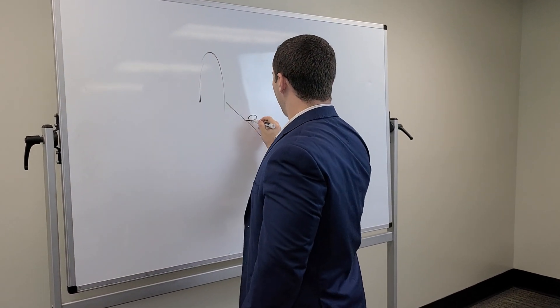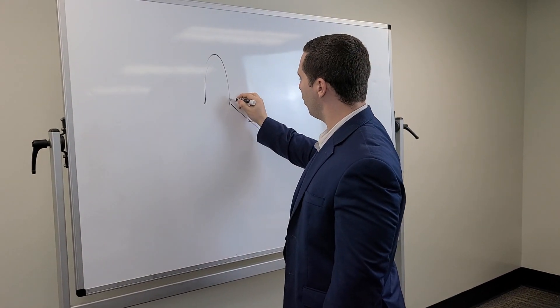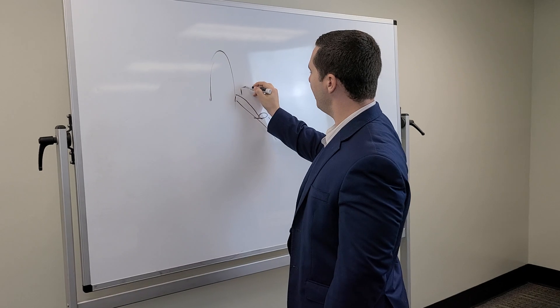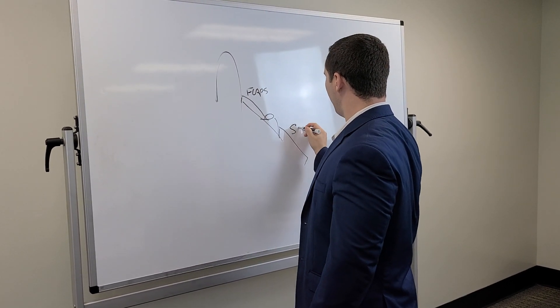And as we know on the 737, we have both slats and flaps. Now, inboard of the engine over here, we have our leading edge flaps. In outboard of the engine, we have our leading edge slats.